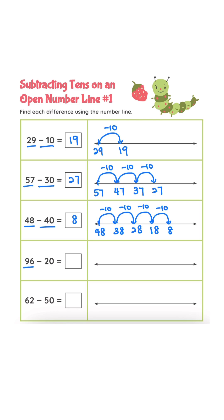96 minus 20. 96 minus 10 is 86. 86 minus 10 is 76. Answer is 76.